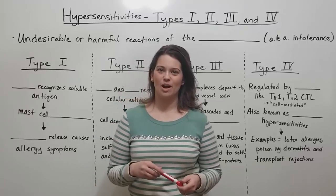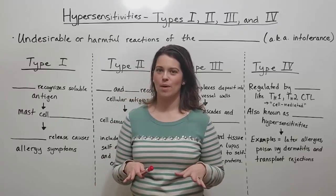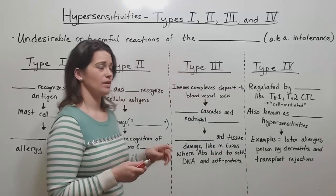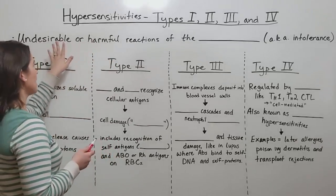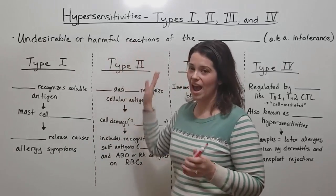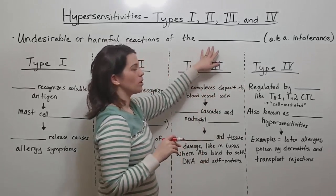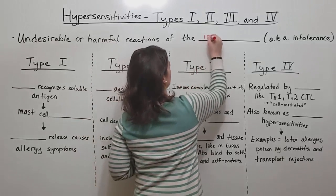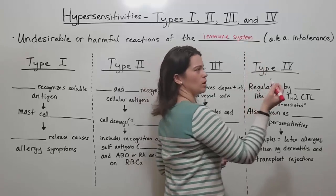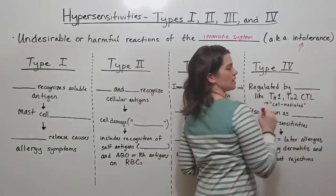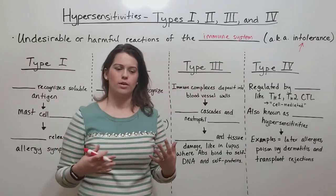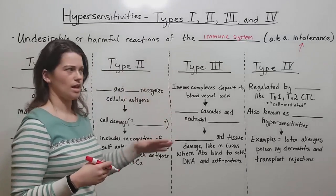Hi everyone and welcome to Biology Professor. Today we're talking about the four different kinds of hypersensitivities. A hypersensitivity is an undesirable or actually harmful reaction of a person's immune system. It's sometimes also called an intolerance, specifically when talking about more undesirable things rather than harmful things, but intolerance can be used to discuss all of them.